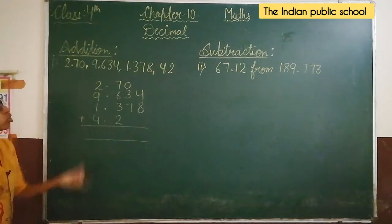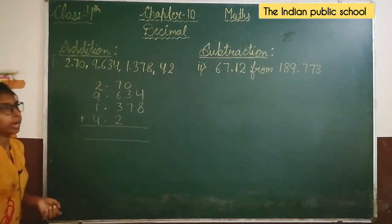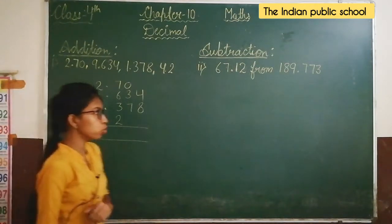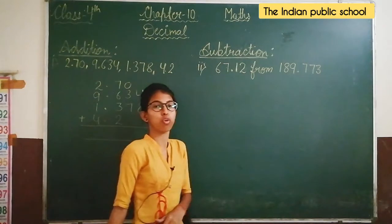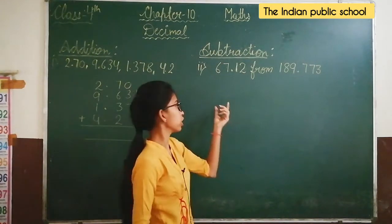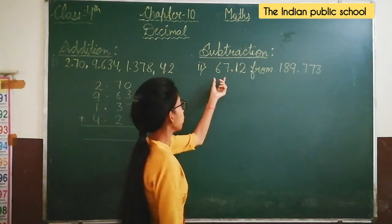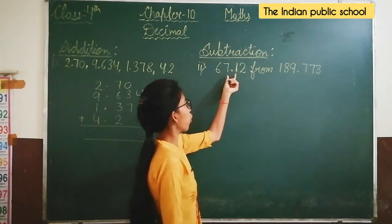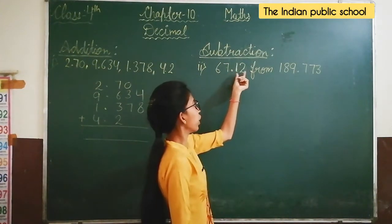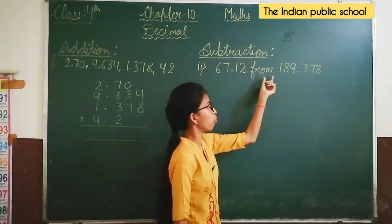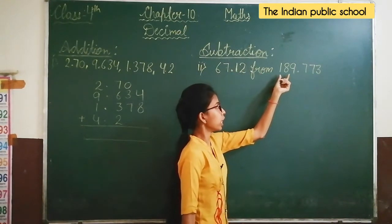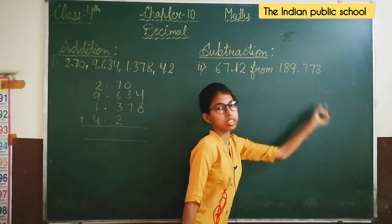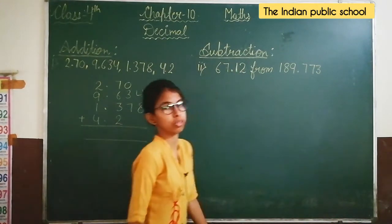After that we will add them all, and you can get the solution by adding them. Now similarly we will do the question for subtraction. The given numbers are 67.12 subtracted from 189.773.